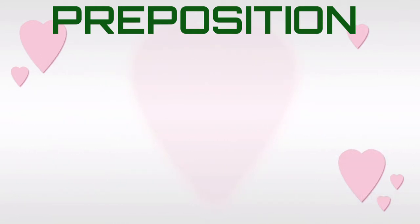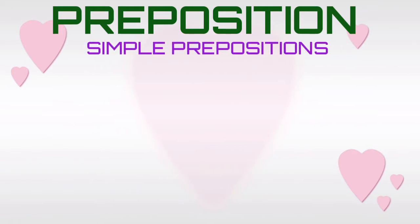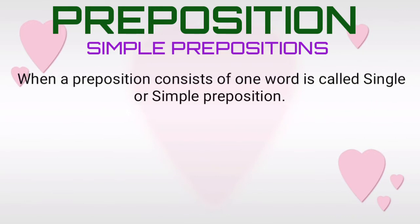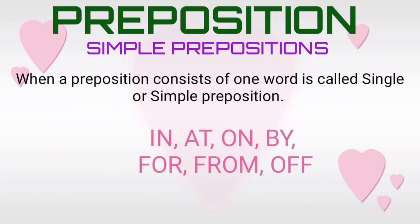We will discuss the very first one: simple prepositions. When a preposition consists of one word, it is called a single or simple preposition. We will learn a few simple prepositions — namely 'in', 'at', 'on', 'by', 'for', 'from', 'of' — and their usages today. Let us discuss each one with examples.